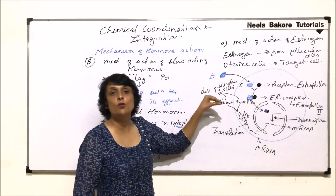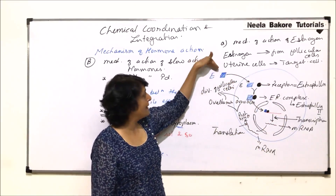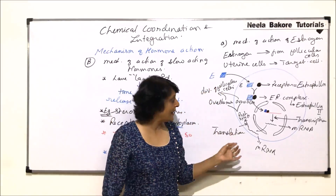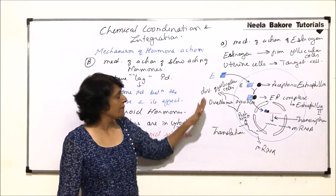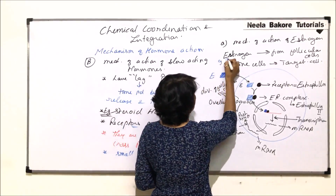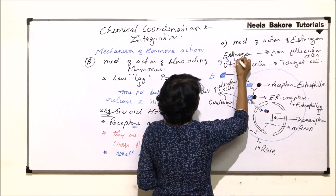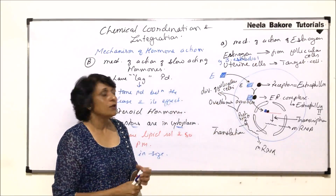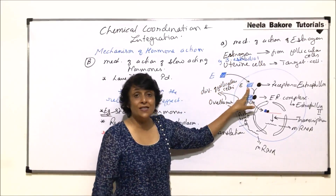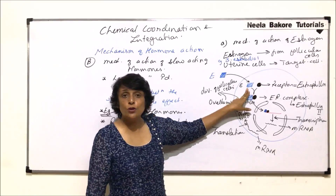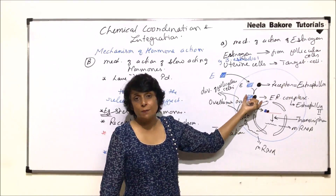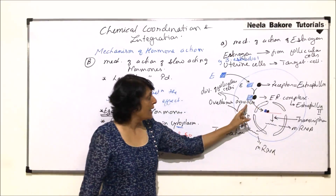These two proteins bring about the division of follicular cells — this is the effect. There is some time required for all these things to happen, so the time between the hormone release and these proteins showing their effect, that is division of follicular cells, there is a time lag. That is why their action is slightly slower. A specific example of estrogen is beta-estradiol. Estrogen is released from follicular cells, and its target organs are uterine cells. In the cytoplasm of uterine cells, the receptor called estrophilin is present.